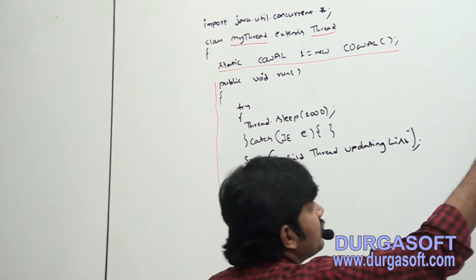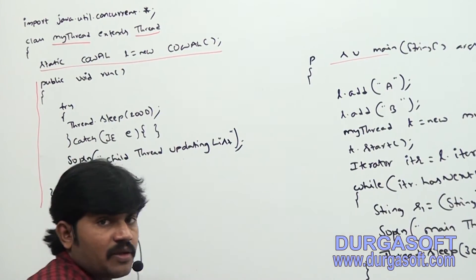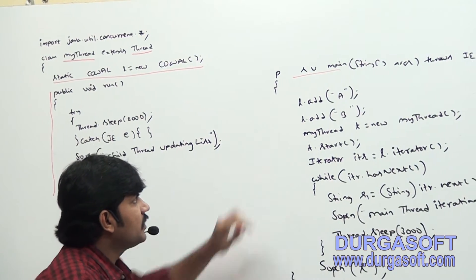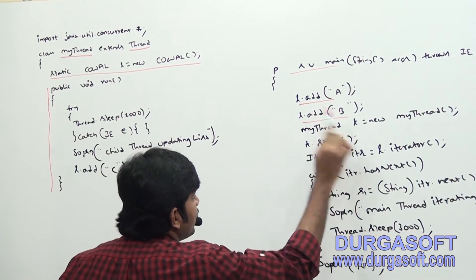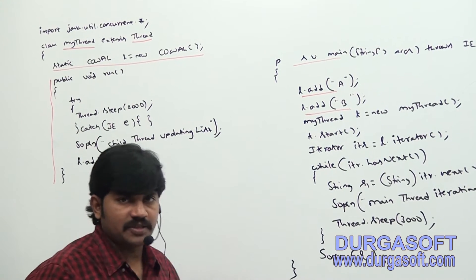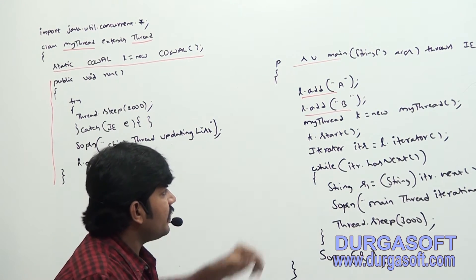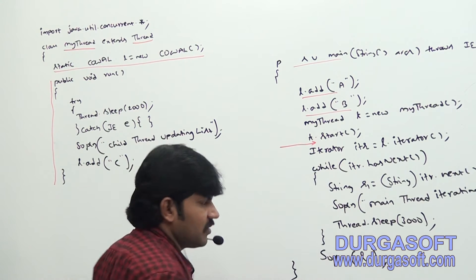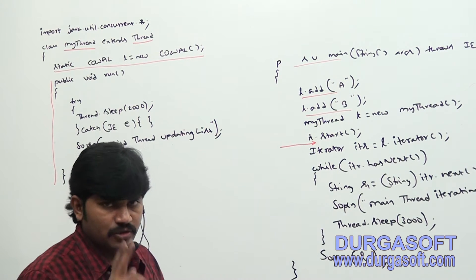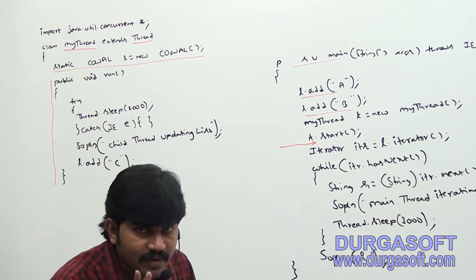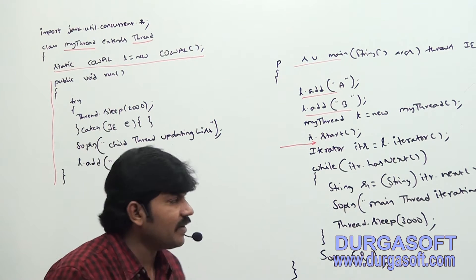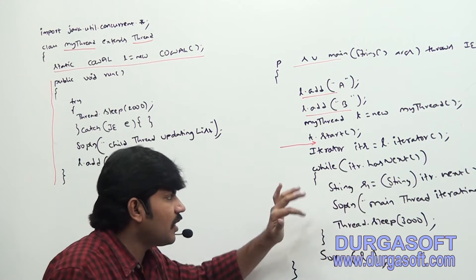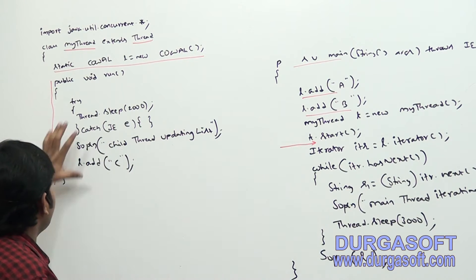This is the main method. The main method adds A and B to the CopyOnWriteArrayList, and then starts the child thread. After calling t.start(), how many threads are there? Two threads — the main thread and the child thread. The main thread continues further, while the child thread is responsible for executing the run method.